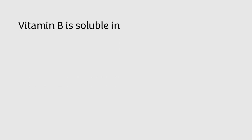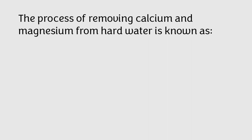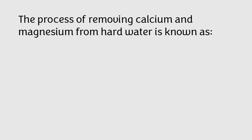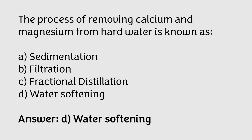Vitamin B is soluble in: water, fats, both A and B, or none of these? The correct answer is option A — vitamin B is soluble in water. The process of removing calcium and magnesium from hard water is known as: sedimentation, filtration, fractional distillation, or water softening? The correct answer is option D — the process is known as water softening.